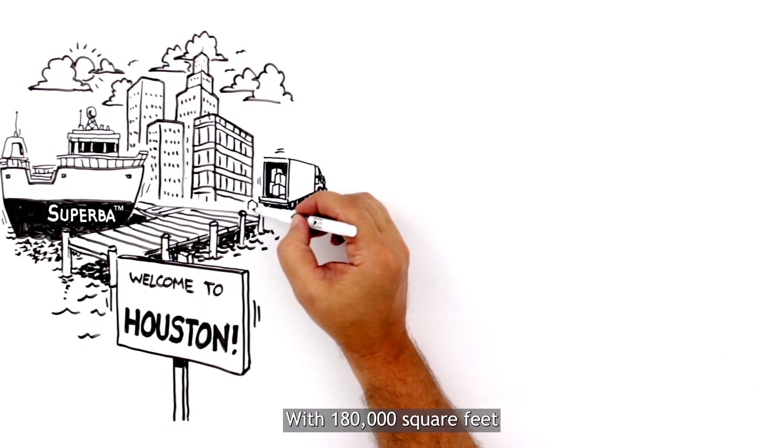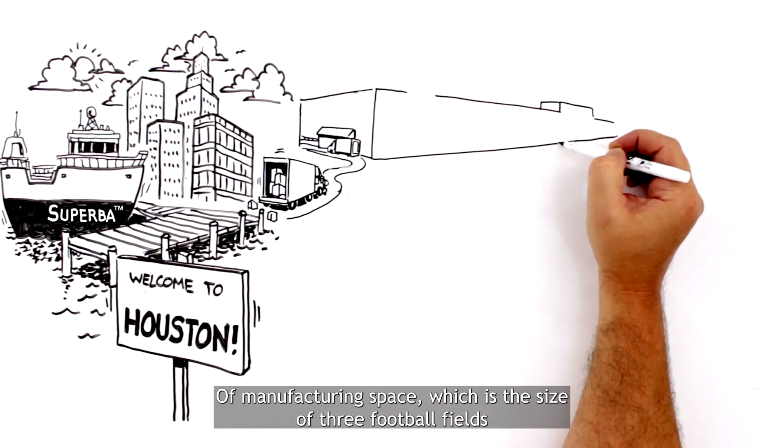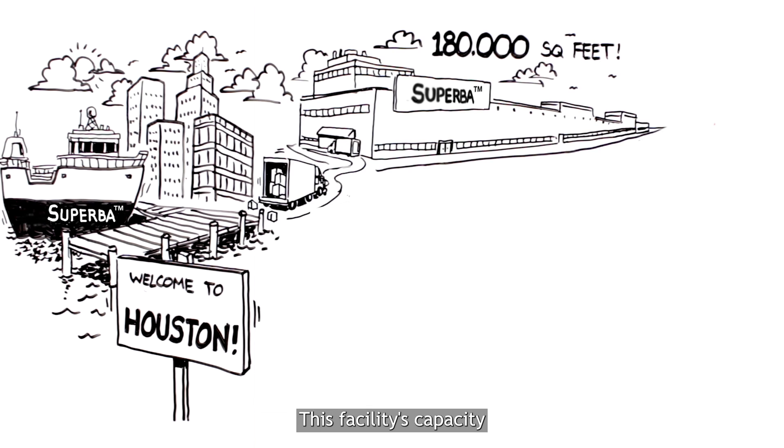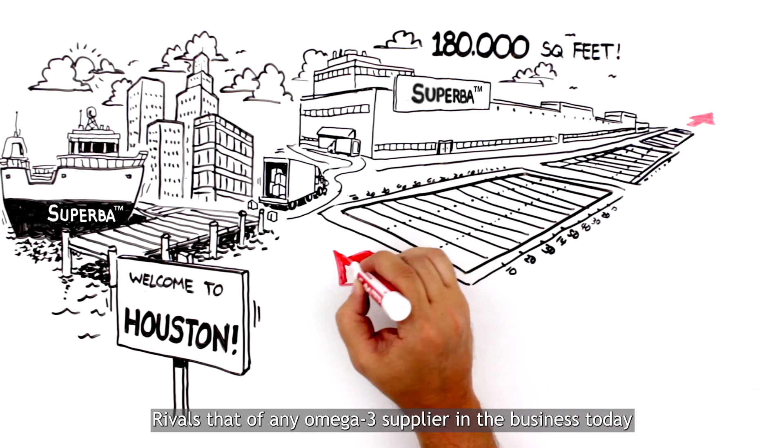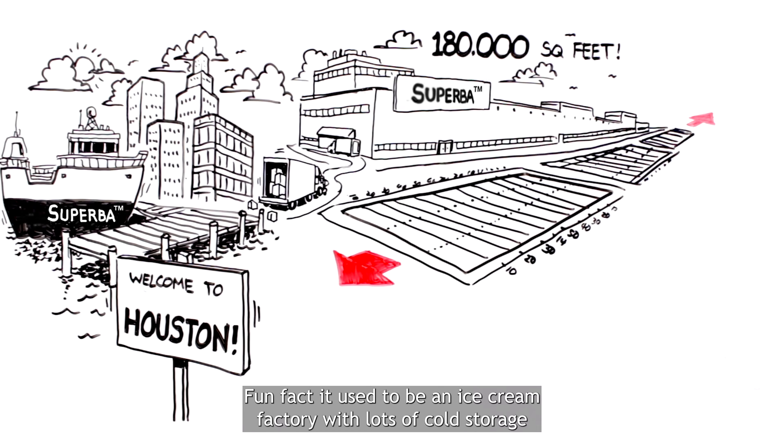With 180,000 square feet of manufacturing space, which is the size of three football fields, this facility's capacity rivals that of any Omega-3 supplier in the business today. Fun fact, it used to be an ice cream factory with lots of cold storage.